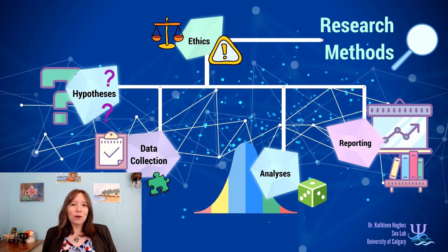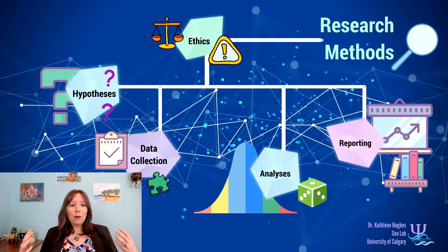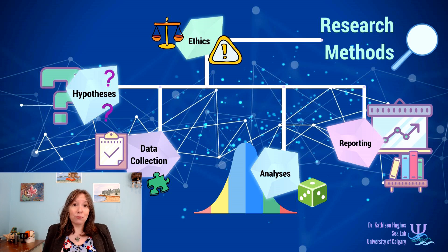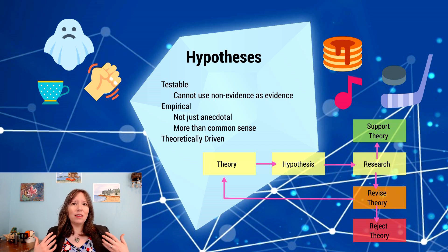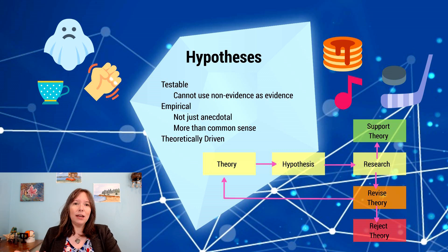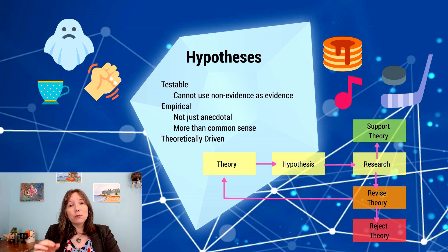After ethics, it's important to think about how we structure the research. One of the first things we do is come up with a research question — something like a theory that you think relates two things. For example, 'I believe studying will improve grades.' However, a hypothesis has to be more specific than that; it has to be something that is testable.